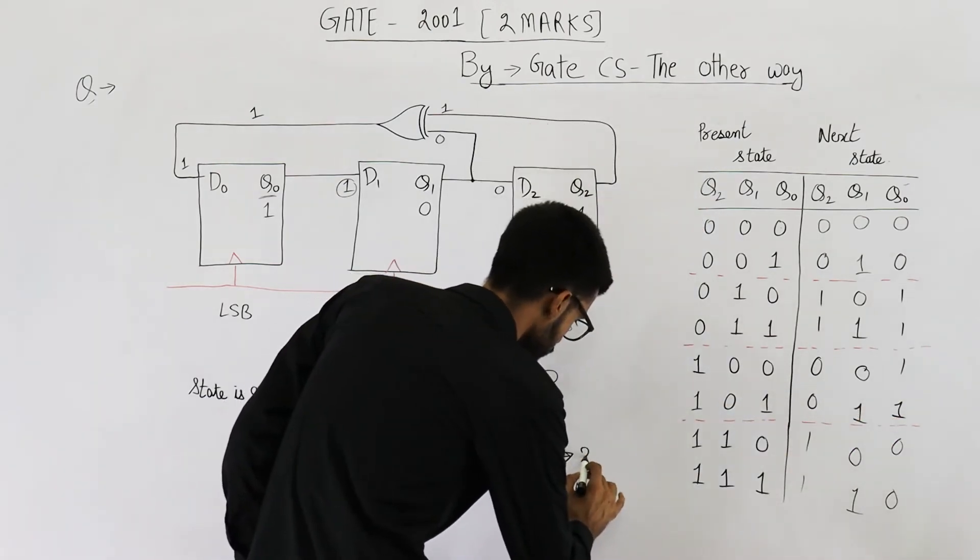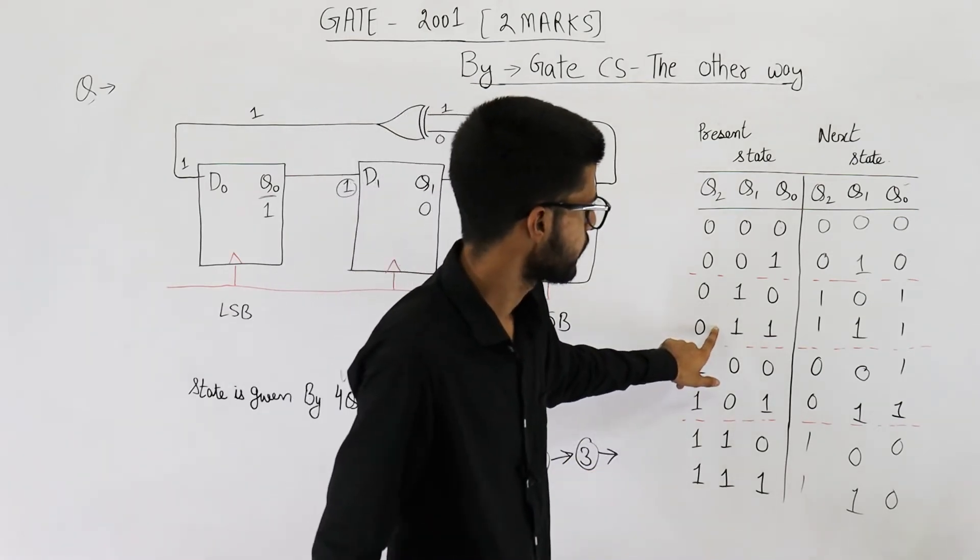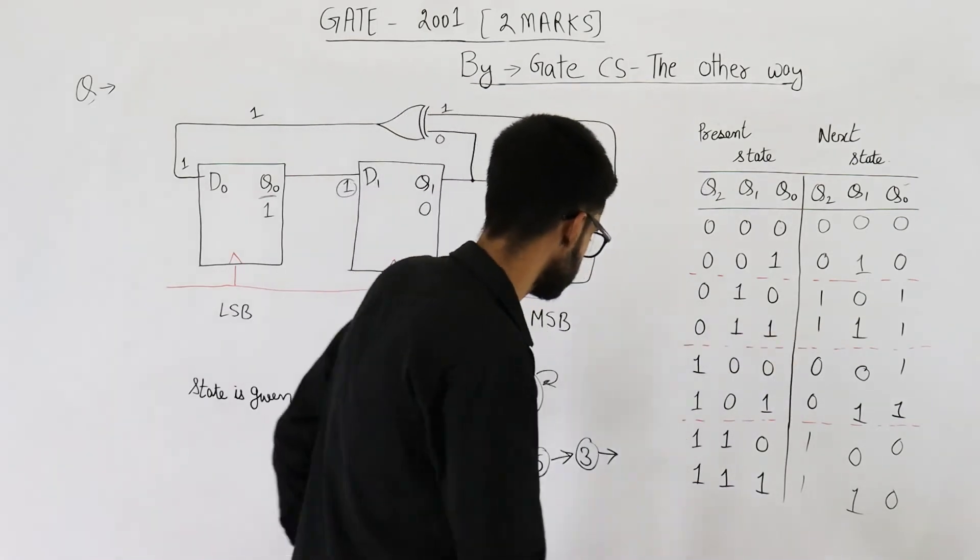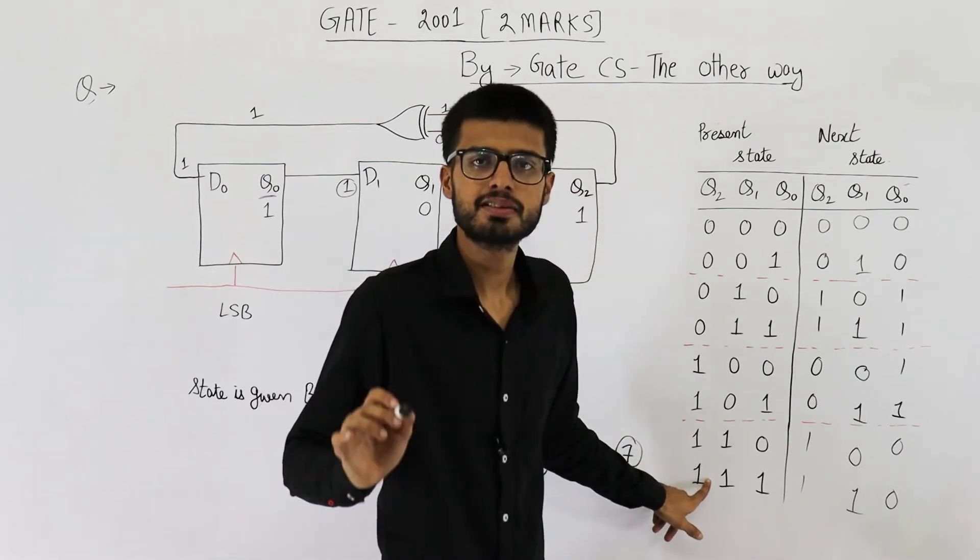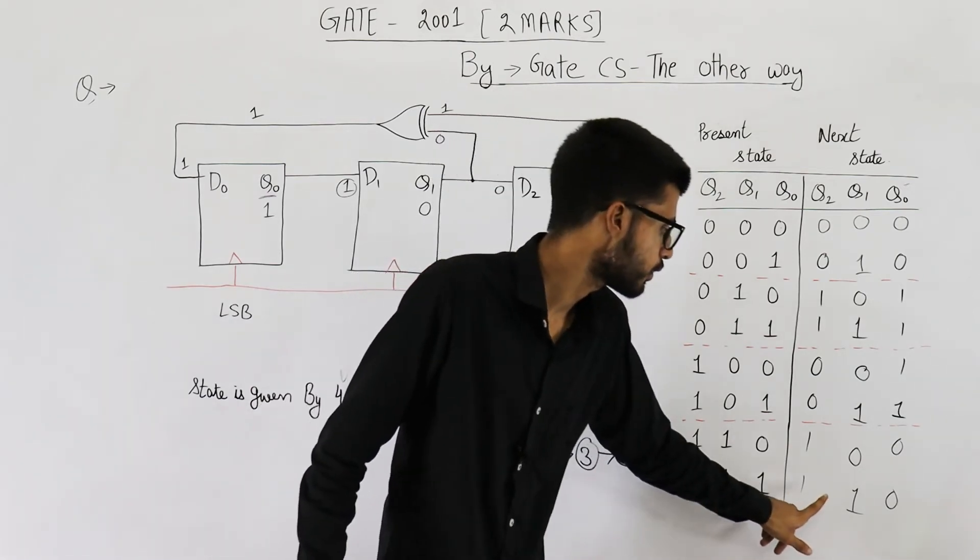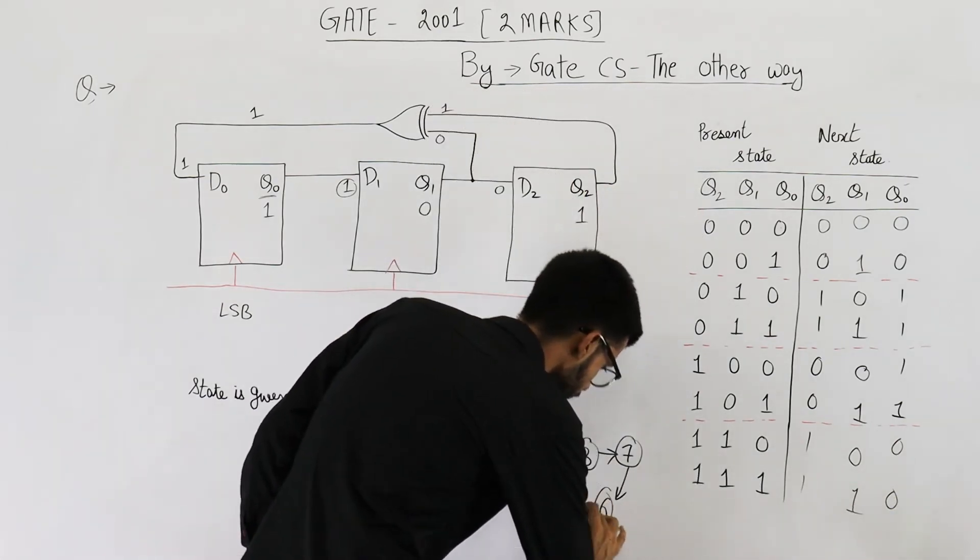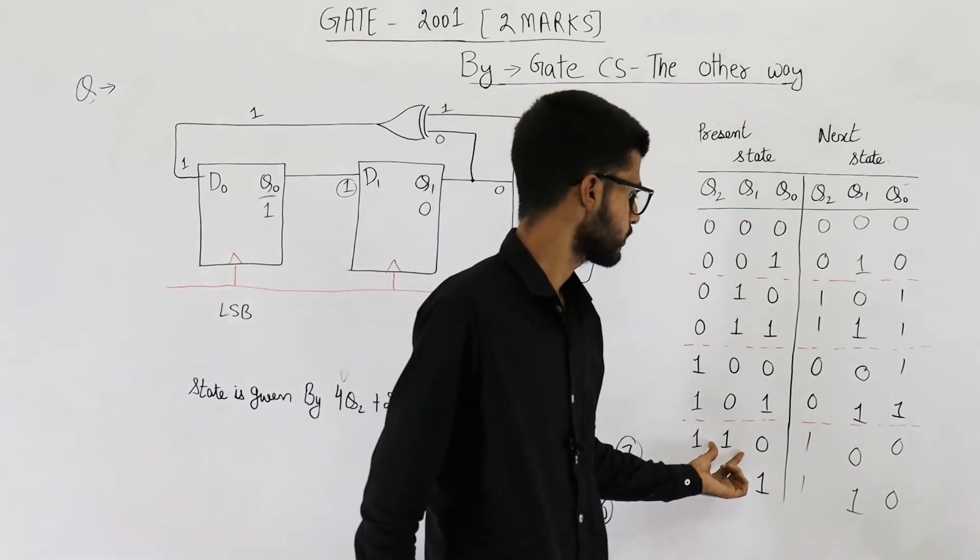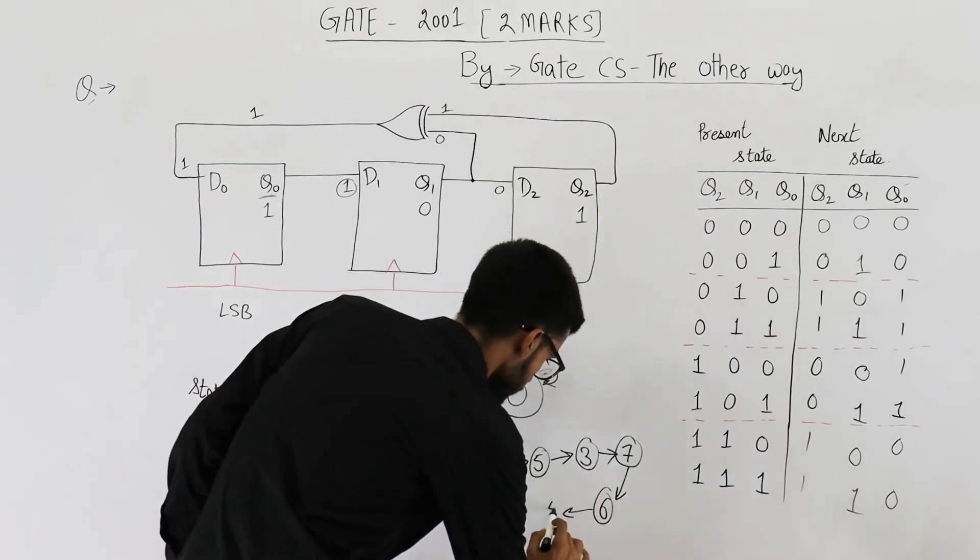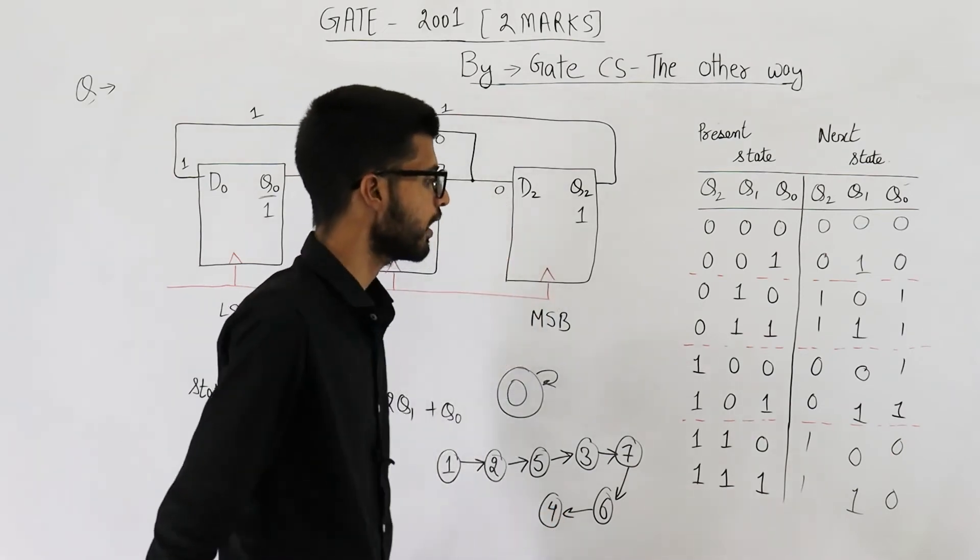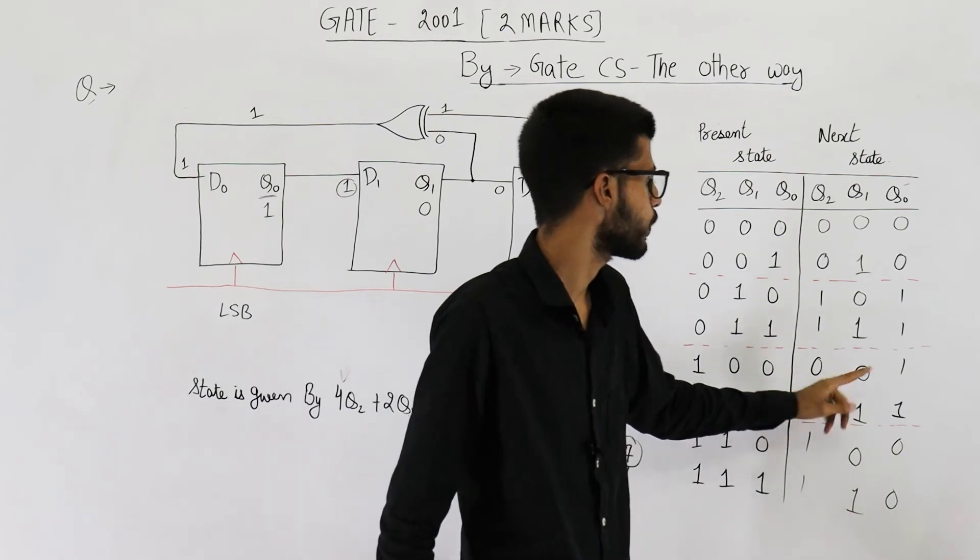5 goes to 3. When you are on state 3, you will go to state 7. When you are on state 7, upon seeing a positive edge of clock, you will go to 1, 1, 0, which is 6. When you are on state 6, you will go to state 4. So we have 4 here. And from state 4, you will go to state 1.